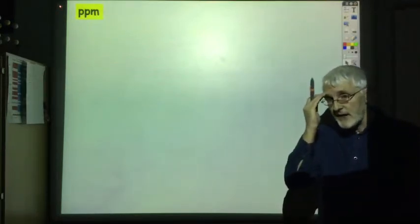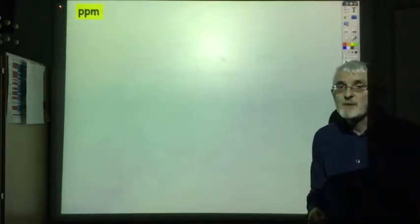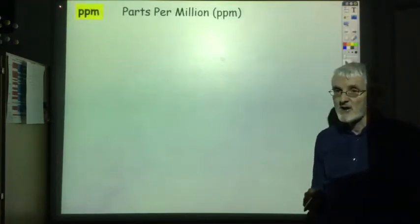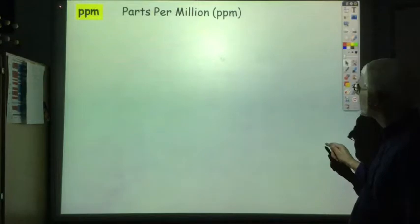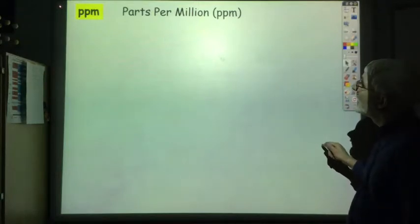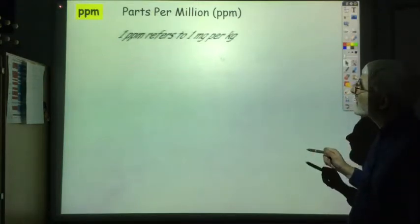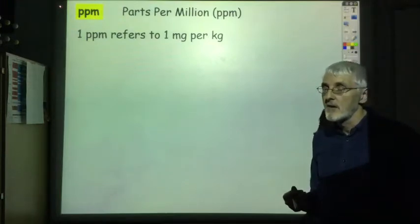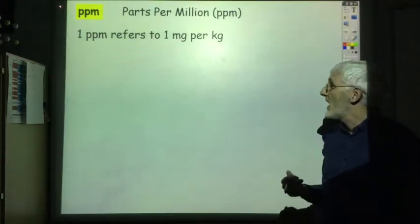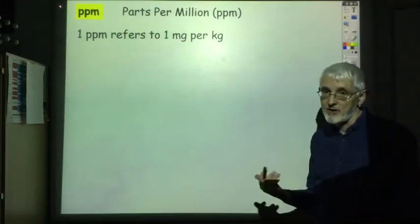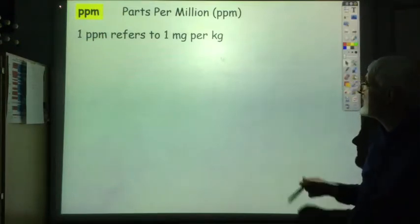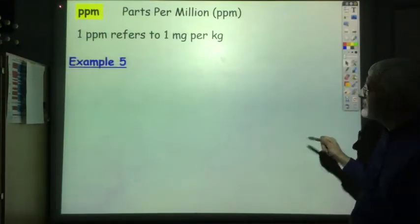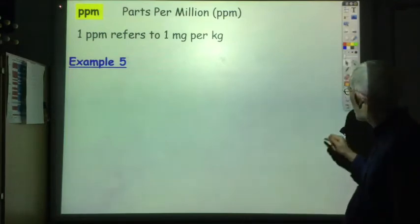Finally, slightly different is the concept of PPM. PPM stands for parts per million. So if we talk about 1 PPM, this means you've got 1 milligram in a kilogram — or a thousand grams — so 1 milligram per kilogram. It's probably easiest to explain through an example.